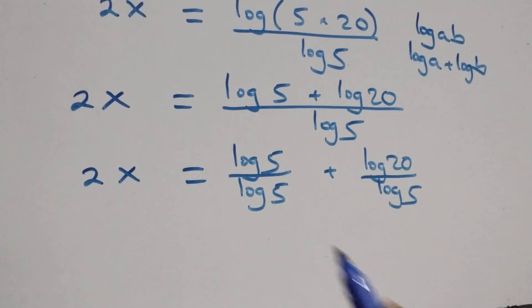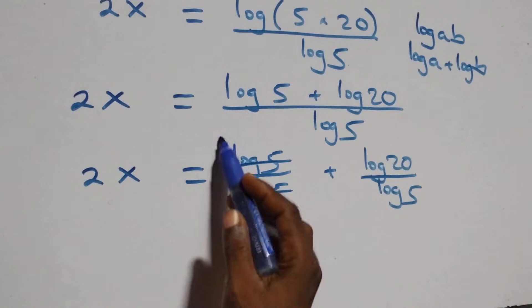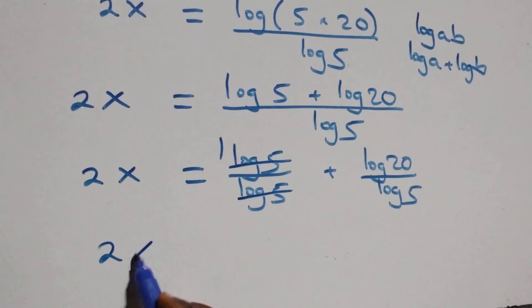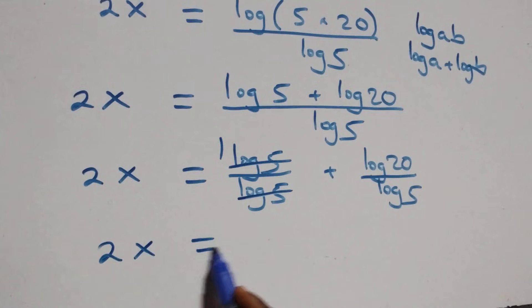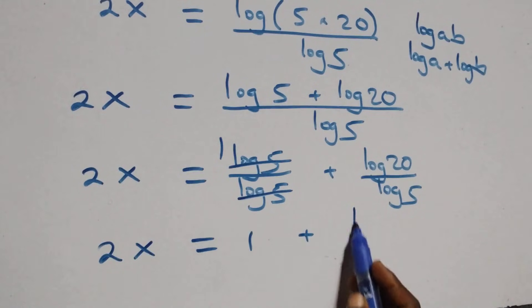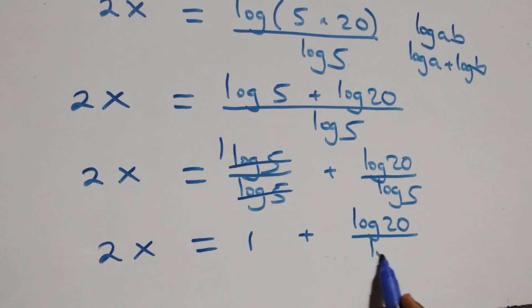So we have 2x. Log 5 over log 5 cancels each other — one is left here. Which implies 2x equals to 1 plus log 20 over log 5.